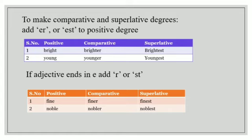Next rule, if adjective ends in E, add R or ST to it. For example, fine, F-I-N-E. Comparative degree will be finer and superlative finest. Let's take one more example, noble, nobler, noblest.